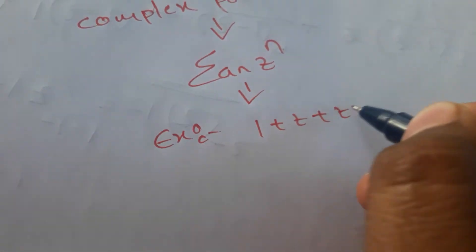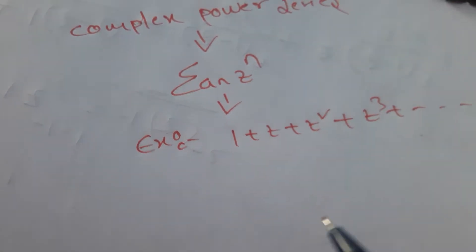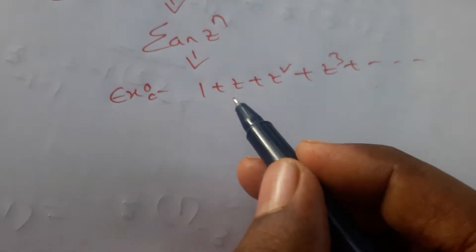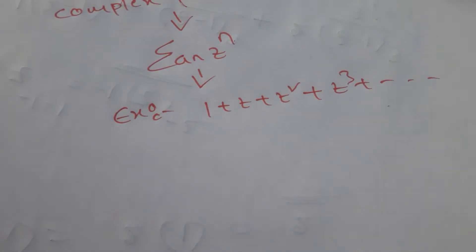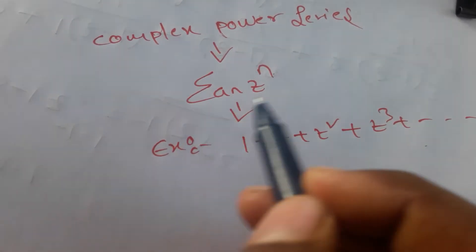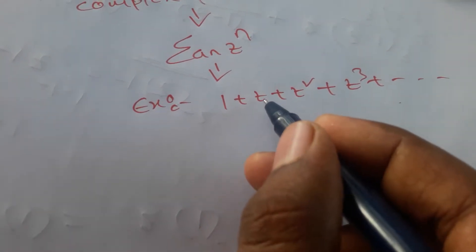In this video I am going to explain complex power series. A series which is in the form of summation a_n * z^n is called the complex power series. To explain this I will take an example: 1 + z + z² + z³ and so on. If you observe here, we have z, z², z³, z⁴, z⁵ — this is called the series.